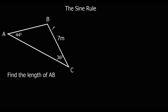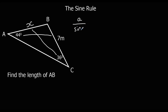Let's look at another example. Find the length AB — we're going to call it x. Have we got opposites? That one's opposite that one, and that one's opposite that one, so we can use the sine rule. We're working out a length, so we're going to use a over sine A equals b over sine B. We're going to have x as our little a, and the angle opposite it as big A. The other length is little b, and its opposite angle is big B.